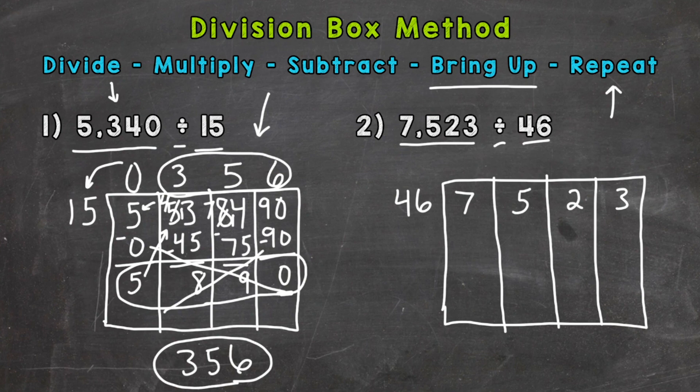So we are all set up and ready to go through the steps. So the first step, divide. So we need to do 7 divided by 46. How many whole groups of 46 out of 7? Well, we can't do that. So we need a 0 here. Multiply. 0 times 46 is 0. Subtract. 7 minus 0 is 7. And now we are ready to bring up. So bring the 7 up. And we have 75.